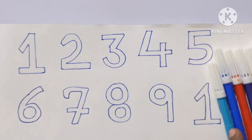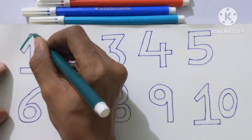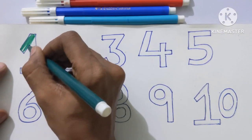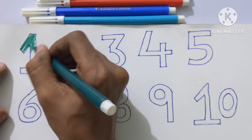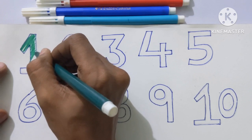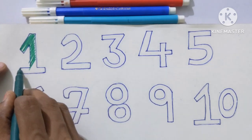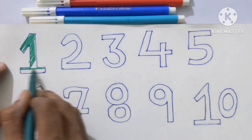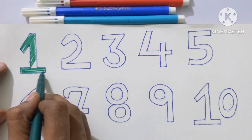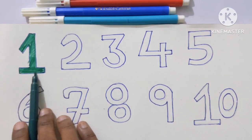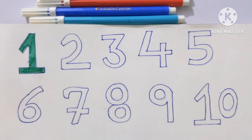Let's color the numbers. Number 1 is colored in green.